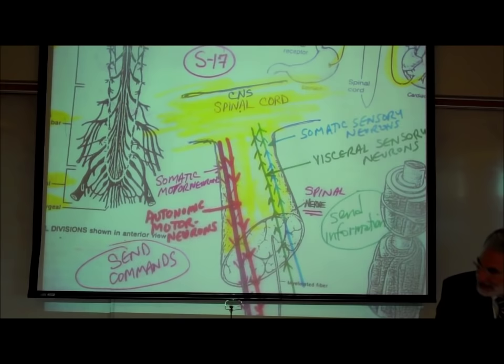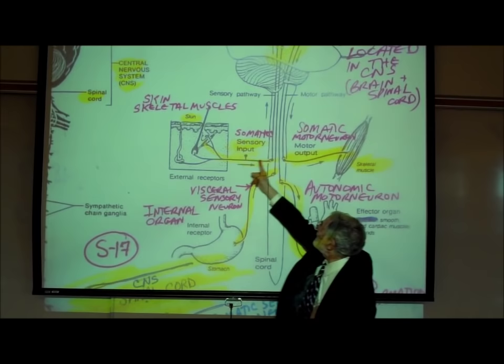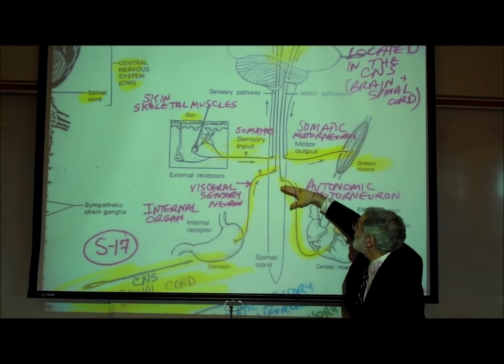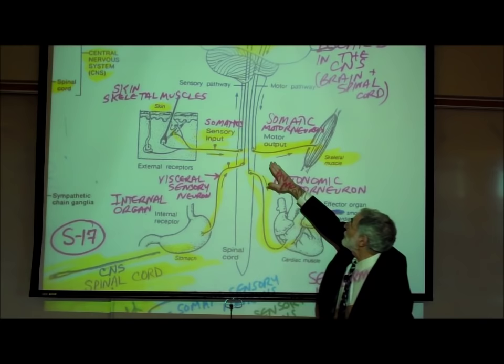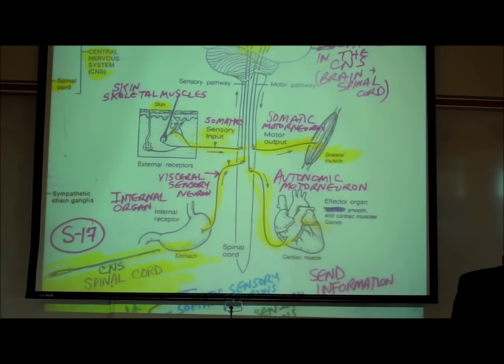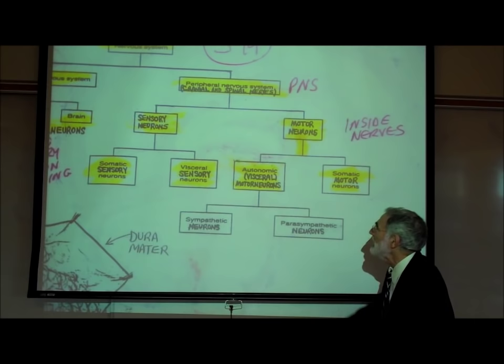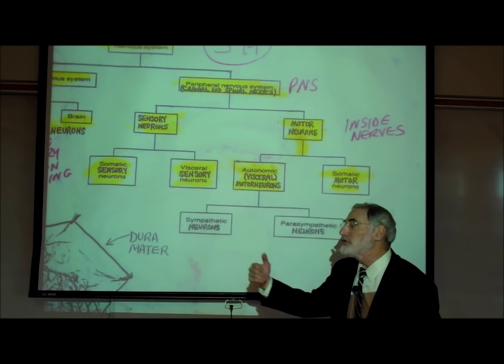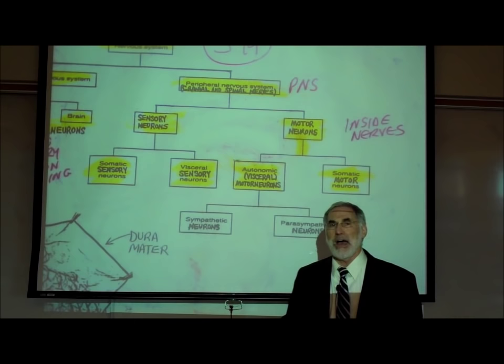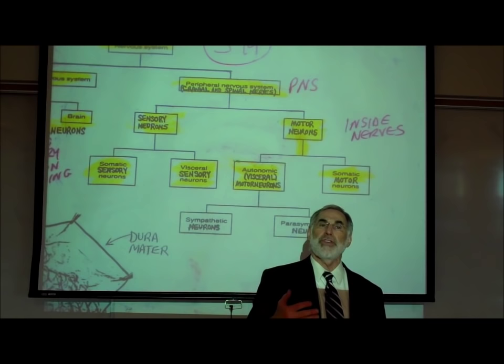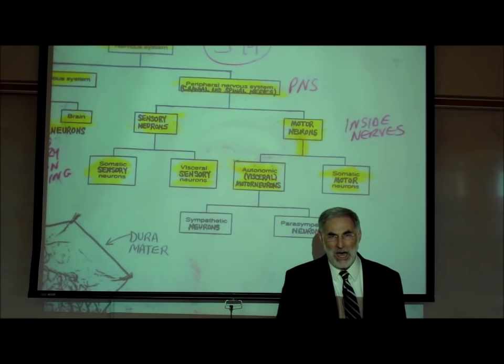Every spinal nerve contains somatic and visceral sensory neurons sending information in, and somatic and autonomic motor neurons controlling the organs. In physiology, you'll learn that autonomic motor neurons are further subdivided into sympathetic and parasympathetic subtypes — one slows the organ down and the other speeds it up.